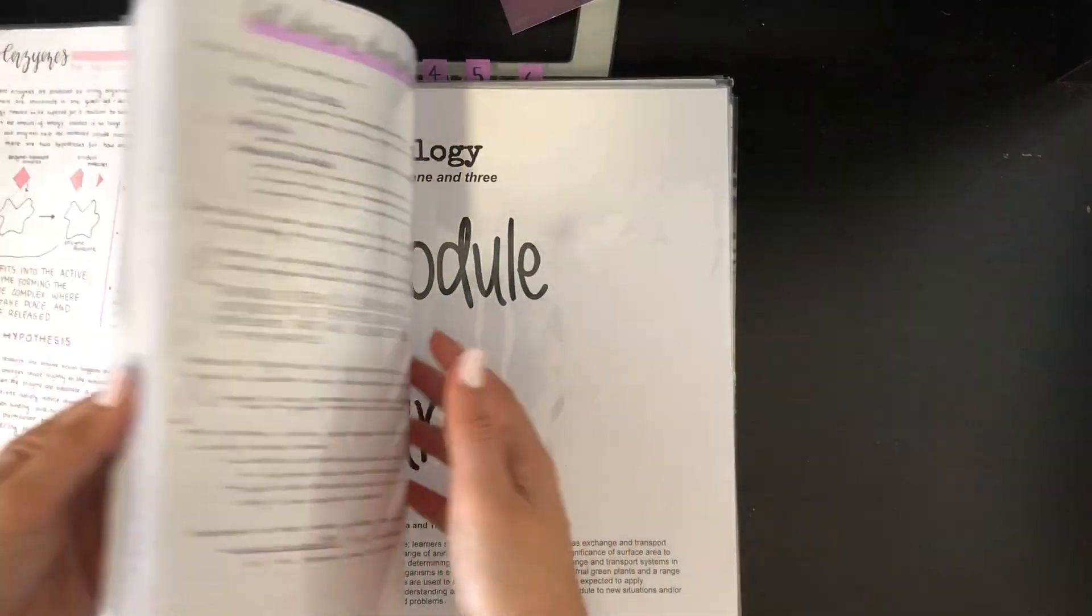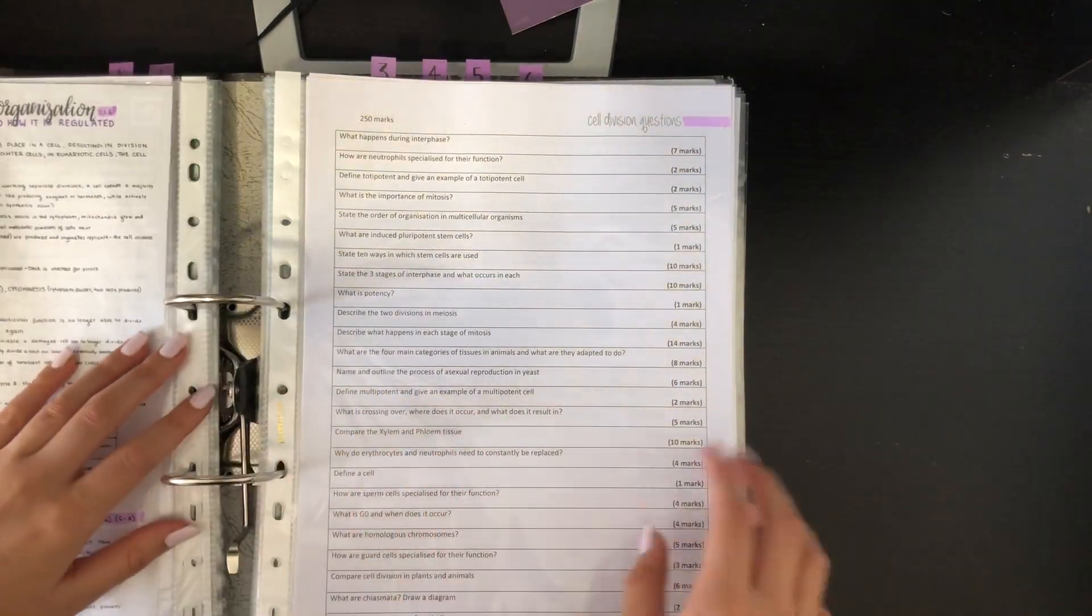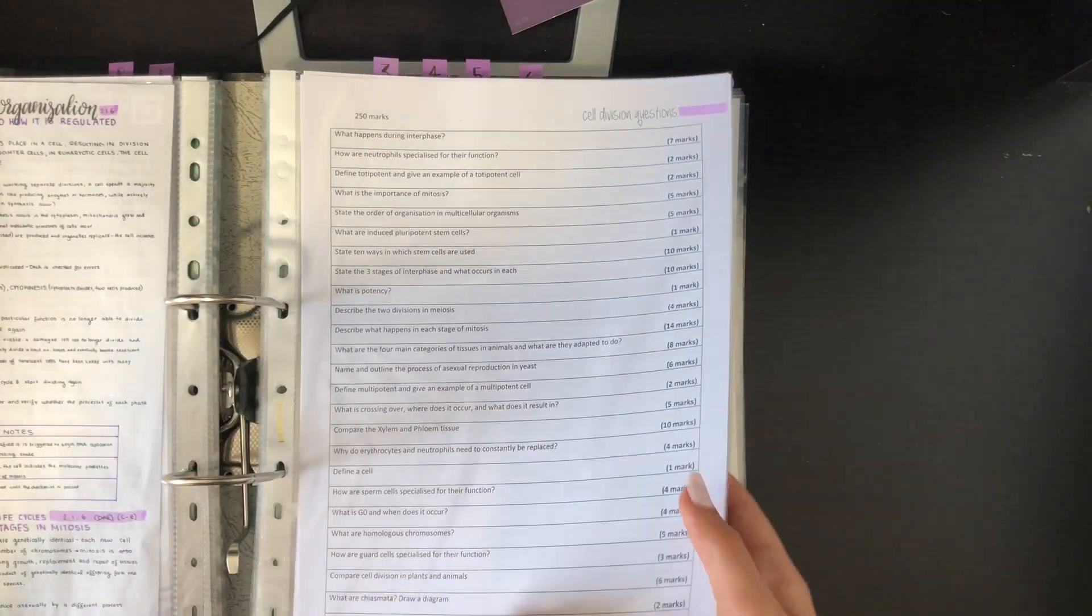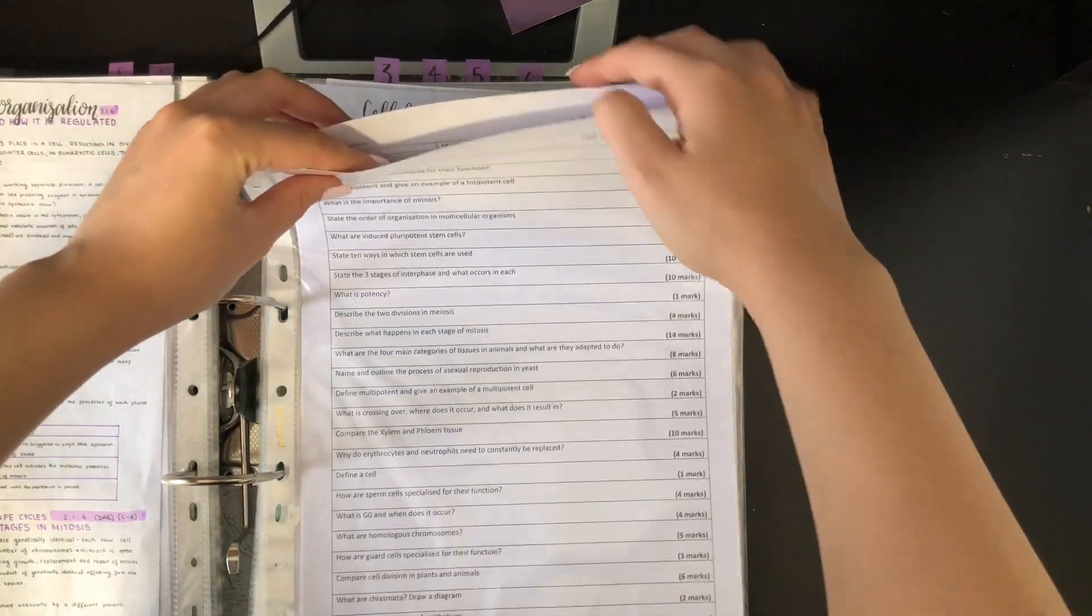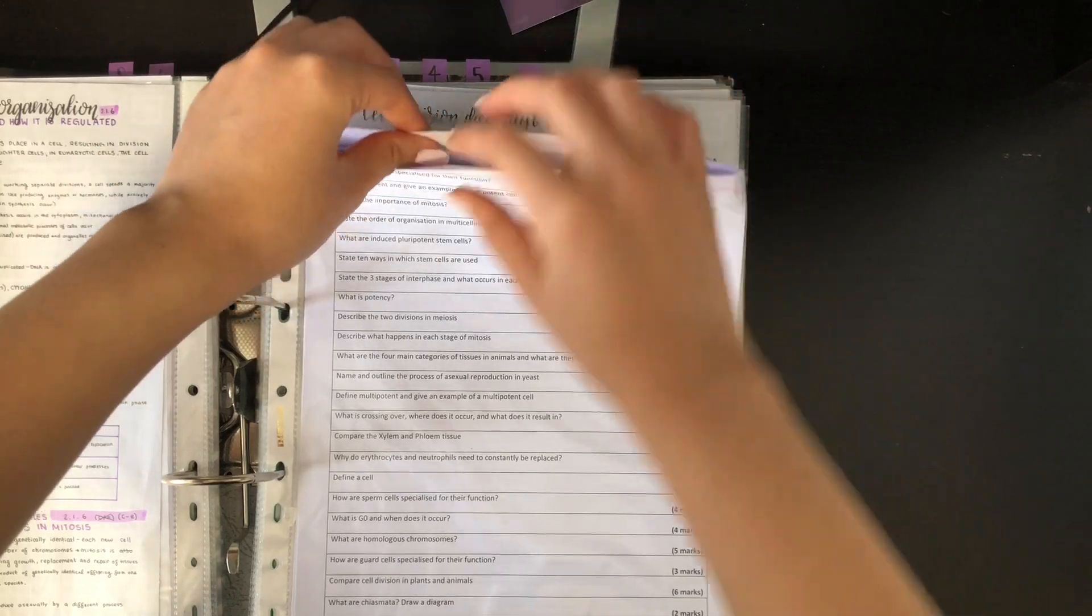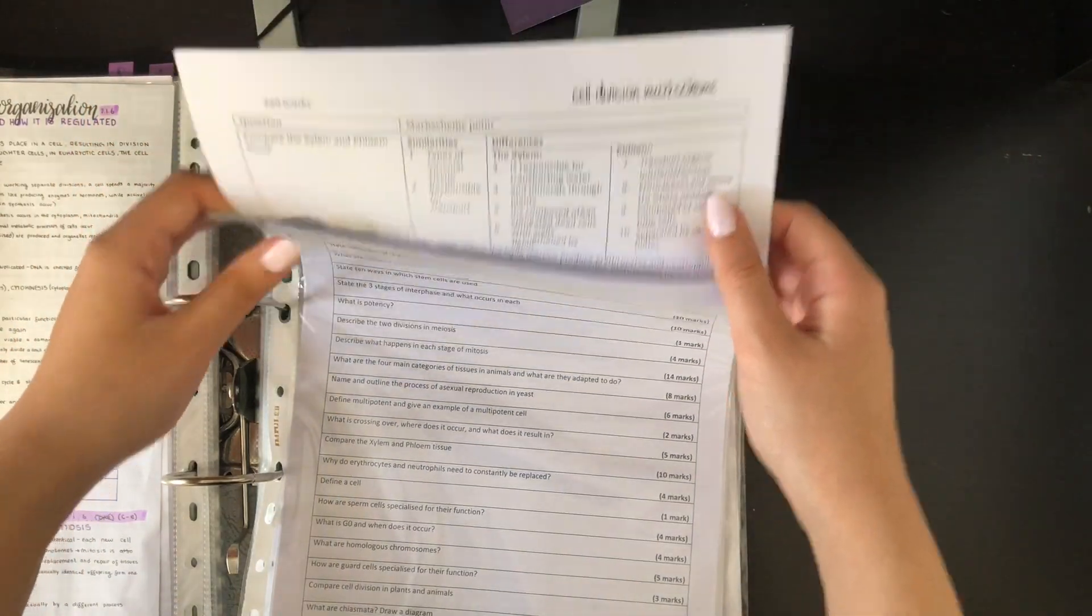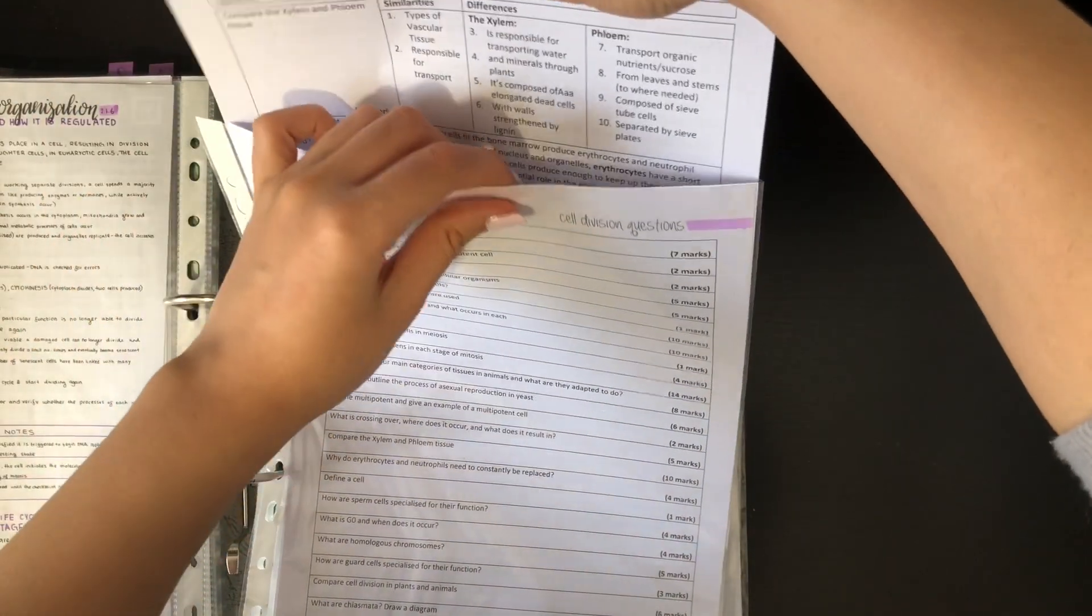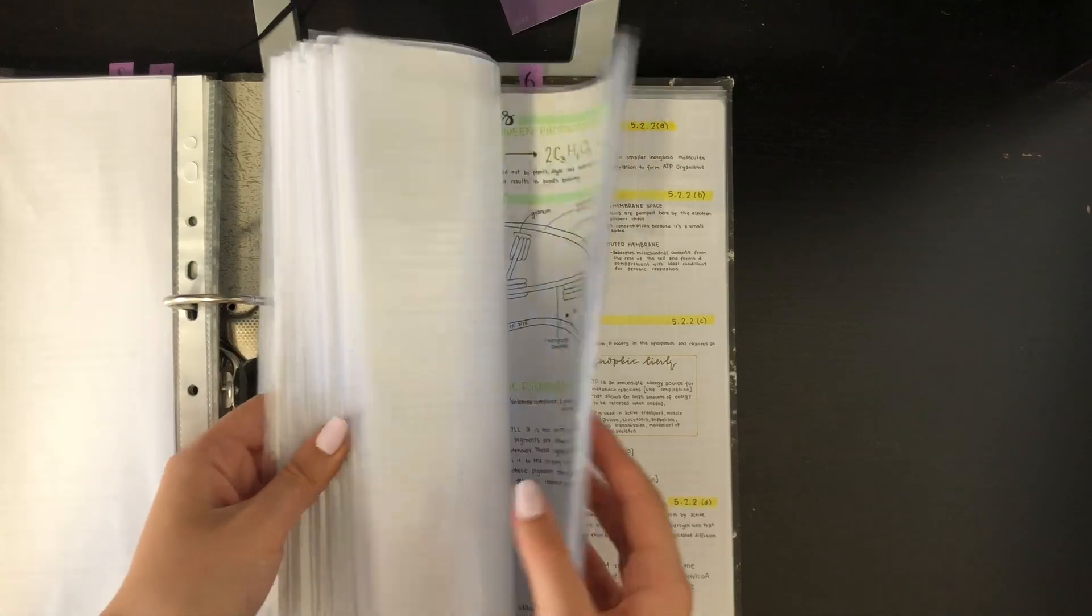So I also have little question papers that I made for each section. And essentially, I just went through past paper questions. And once I did all of the past paper questions I could possibly find, I made this little sheet with questions that I made from my notes, as well as questions from my past papers, included a little mark scheme for myself so that I could constantly test myself and just memorize the mark scheme essentially.